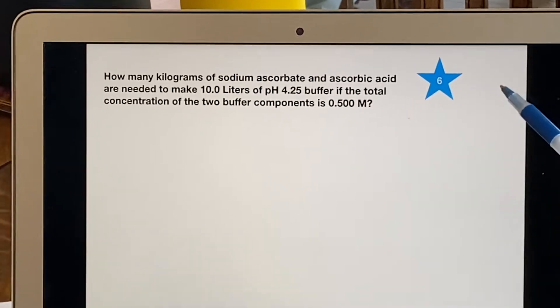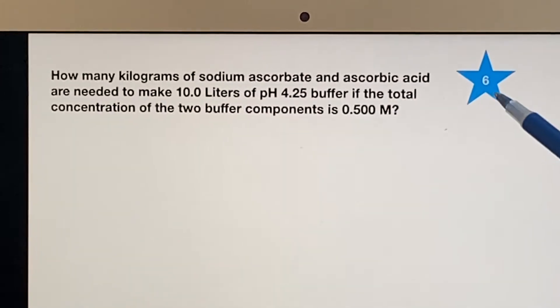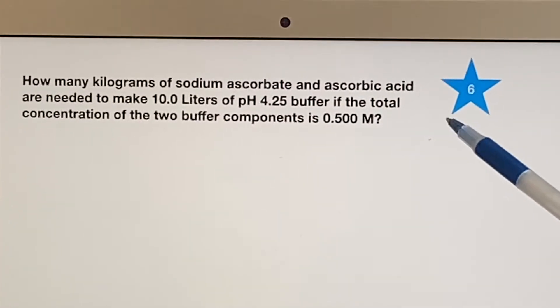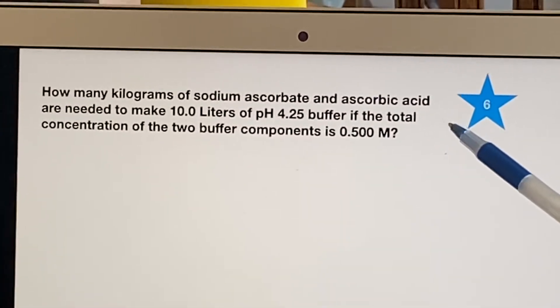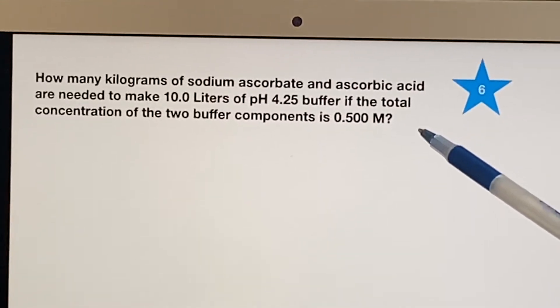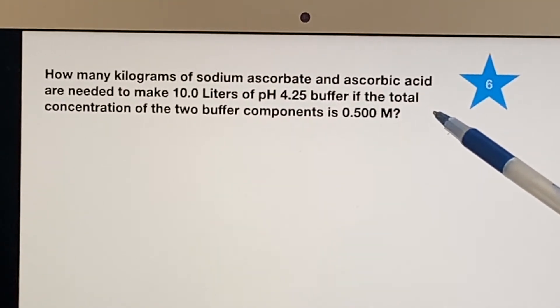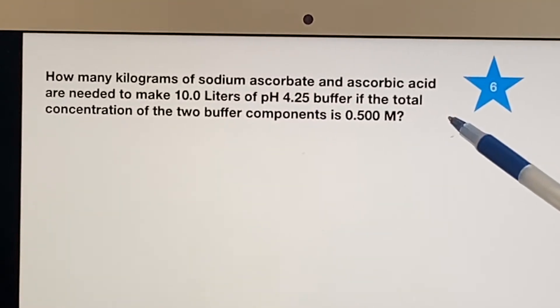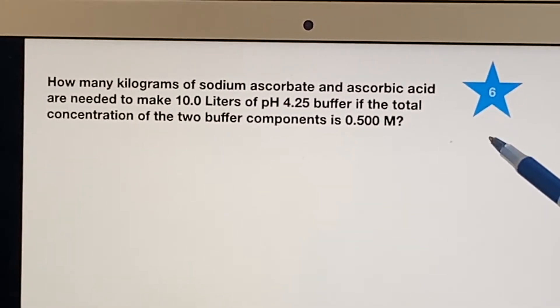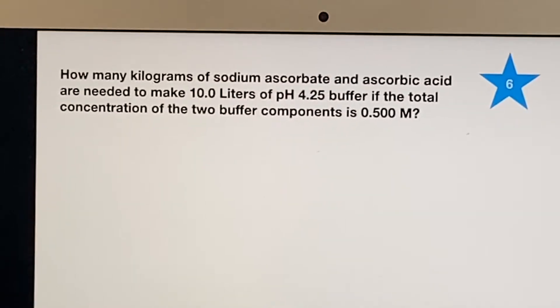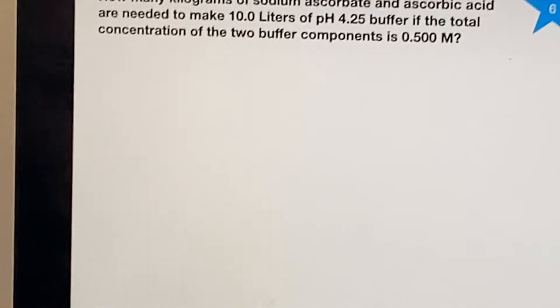Alright, so now we are asked another puzzle. How many kilograms of sodium ascorbate and ascorbic acid are needed to make 10 liters of pH 4.25 buffer if the total concentration of the two buffer components is 0.5 molar? What the heck? What are they asking even? Well, I might want to just start by trying to figure out what they have given me because they've just used a bunch of things I'm not even used to seeing.